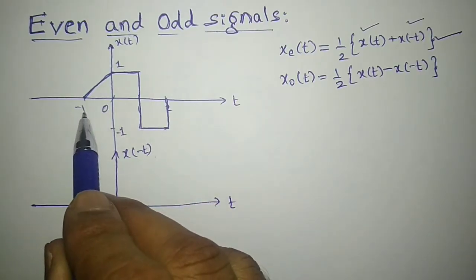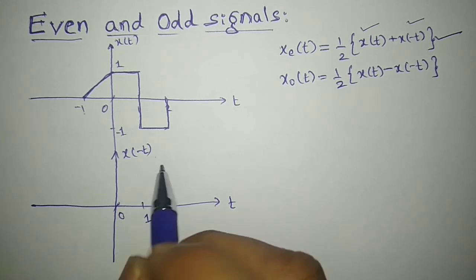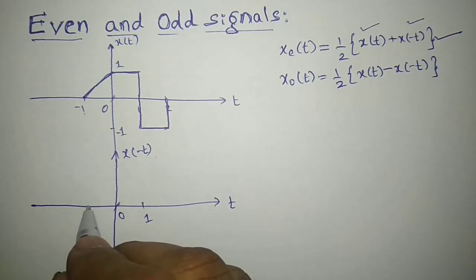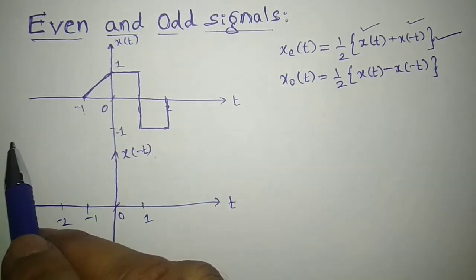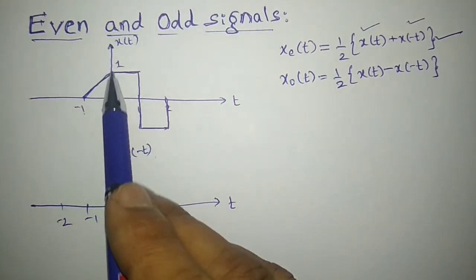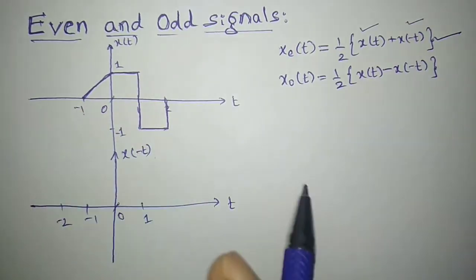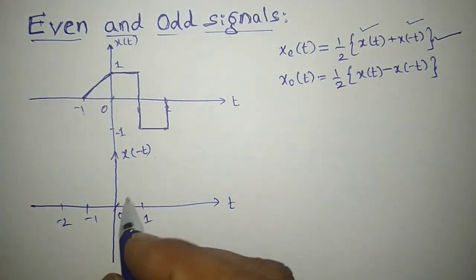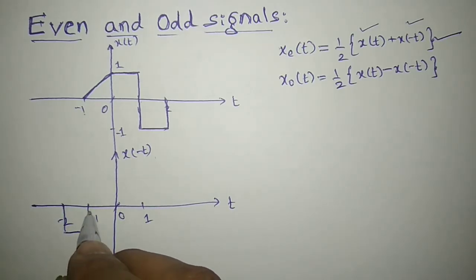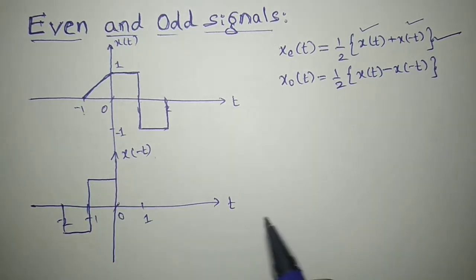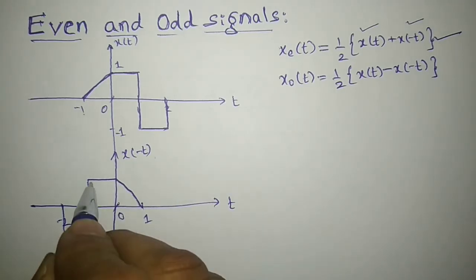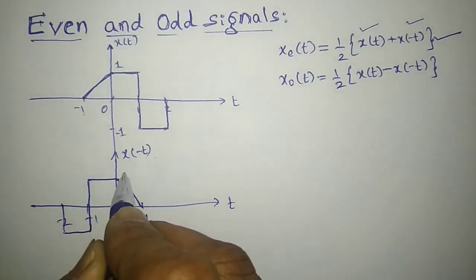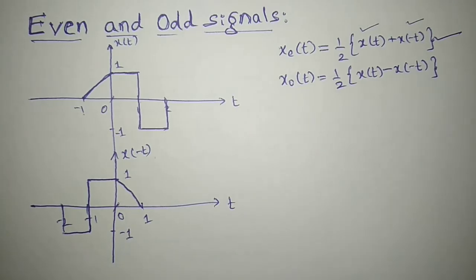For example, the time axis value minus 1 will become plus 1. Zero remains as it is. And plus 1 and plus 2 will become minus 1 and minus 2. I have to take the mirror image of the signal along the vertical axis — just fold it. So this is how ultimately the signal x(-t) looks: amplitude 1 becomes amplitude minus 1. So now I have both x(t) and x(-t).